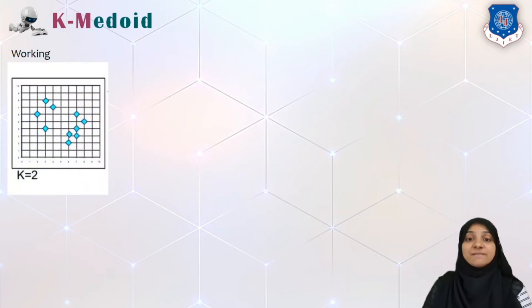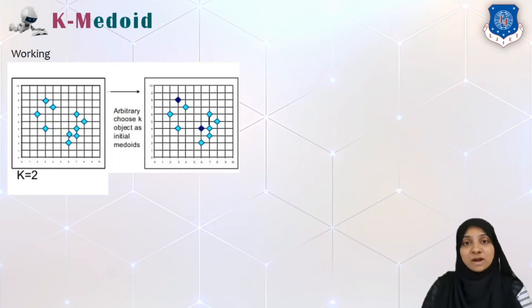Say for example we are given some data points which are represented in a two-dimensional space and we are also given initial K value as 2. We can mark any two different data points as our new medoids. So two new medoids can be represented by letters marked with dark blue in color. These two points are not centroid but they are the data point, one of the data point itself. That's why they are now called as medoids.